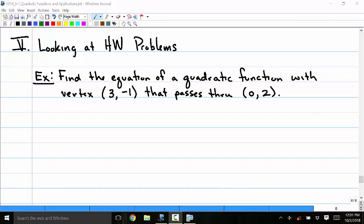Find the equation of a quadratic function with vertex (3, -1) that passes through the point (0, 2).